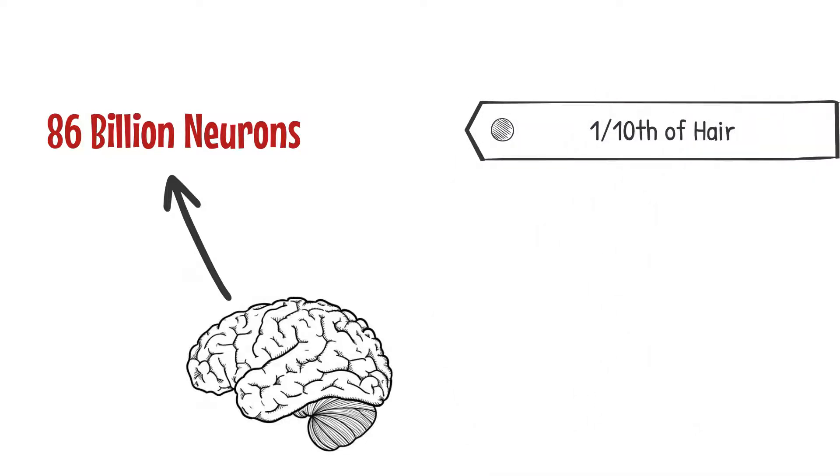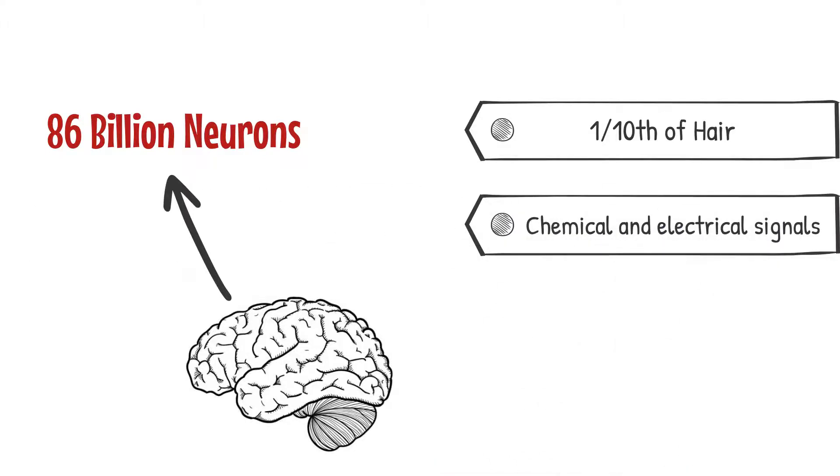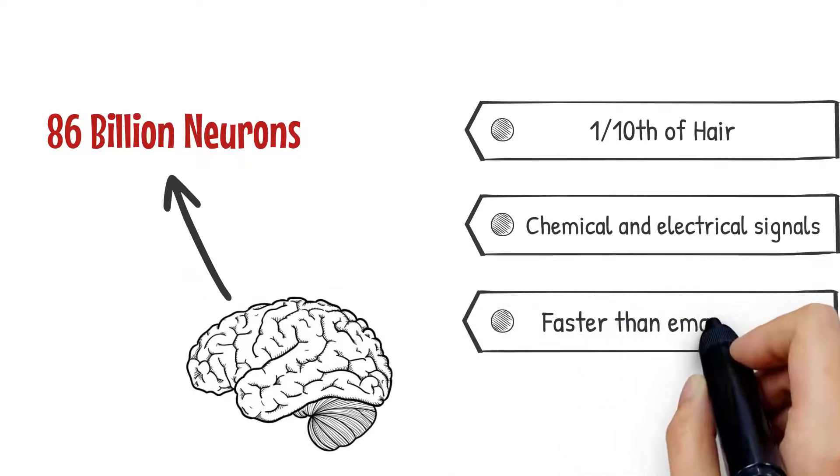These tiny nerve cells accept, process and transmit information through chemical and electrical signals. Think of it as sending an email to a friend, but much, much faster.